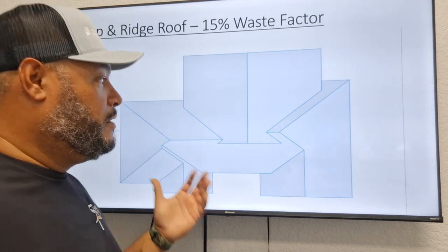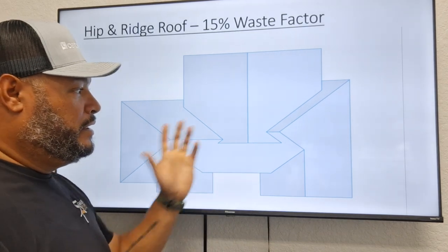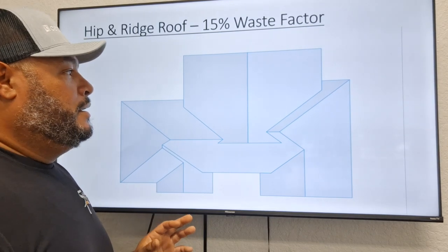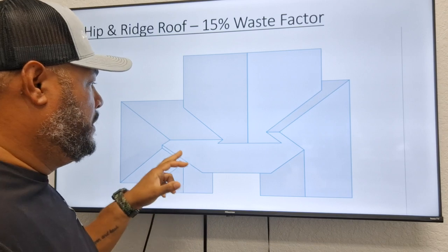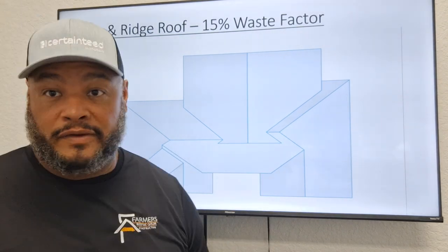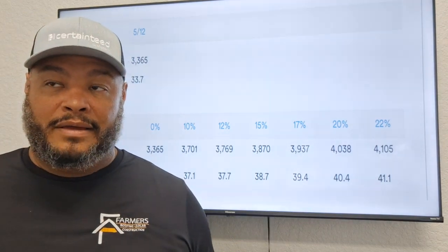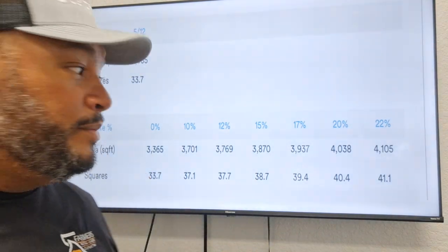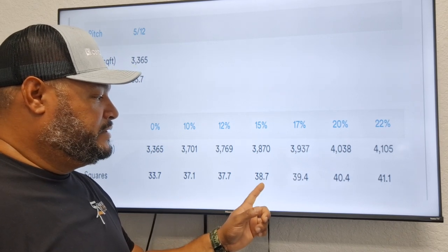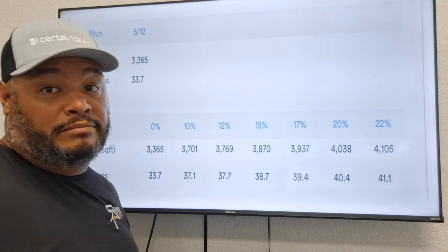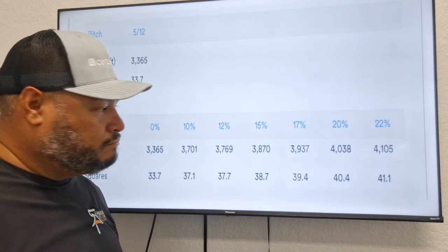When you start getting into crazy roofs like this — where there are a lot of different valleys, rakes, and hips — immediately go 15%. Because there's going to be waste in these valleys, waste in these hips, and waste along the rakes. All of that area is going to be waste, so this would be a 15% waste factor. This particular one comes out between 0.66 and 0.99, so I would just go flat out 39 squares — 39 times whatever our per-square price is.